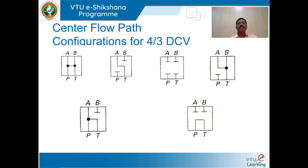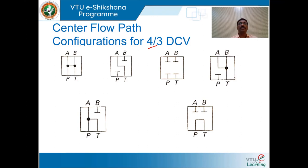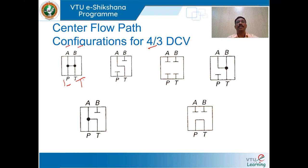We shall move on to center flow path configurations for the 4-way 3-position directional control valve. We have six types. In the first, A, B, and P are all open to tank — all ports open to tank.